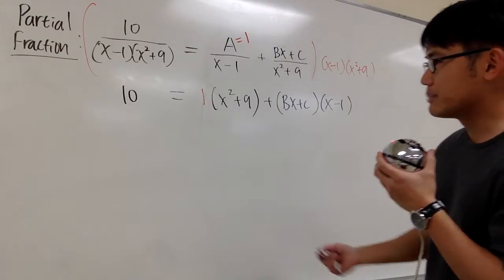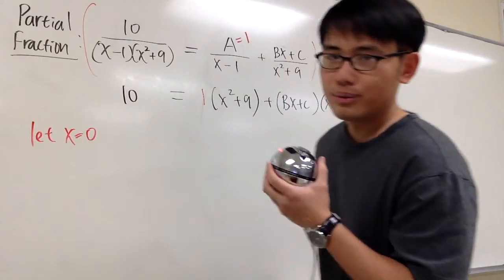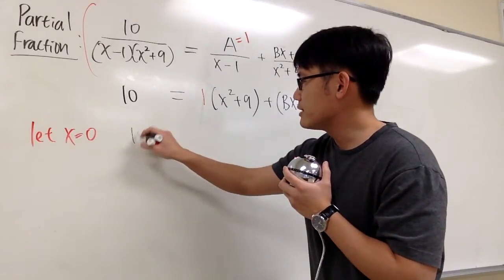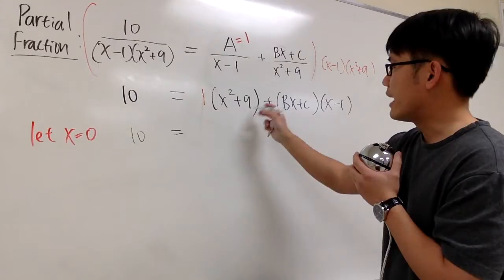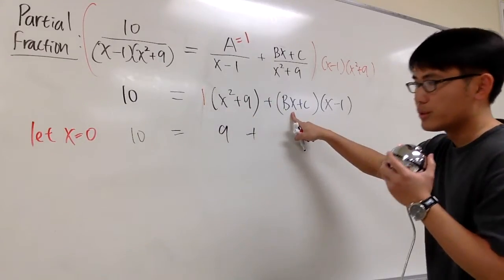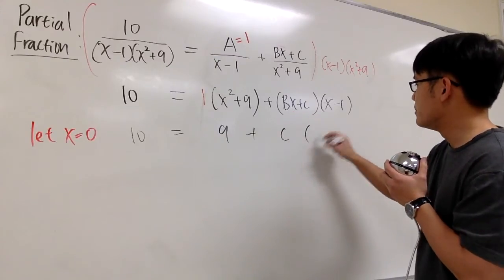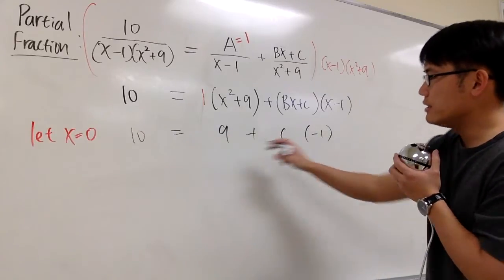And what we can do now is plug in easy numbers. Just try to use 0. Because 0 is like the easiest number, right? So if you're plugging 0 into all the x, we have 10. This is going to be 0 + 9 times 1, which is 9. Plus, if x is equal to 0, B is gone. We just have C times 0 - 1, which is -1.